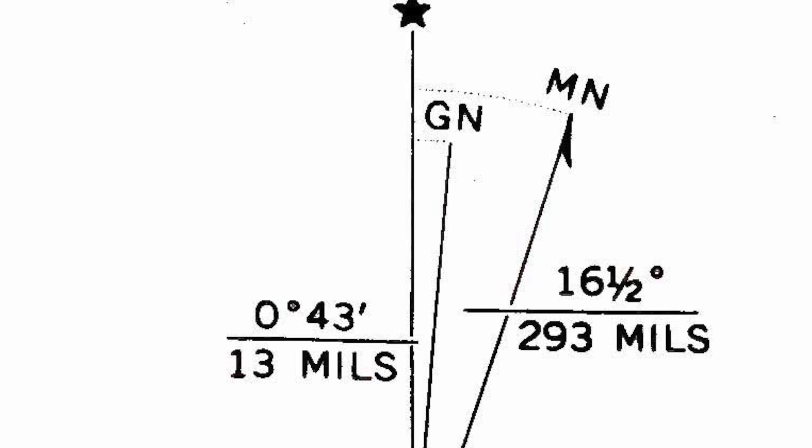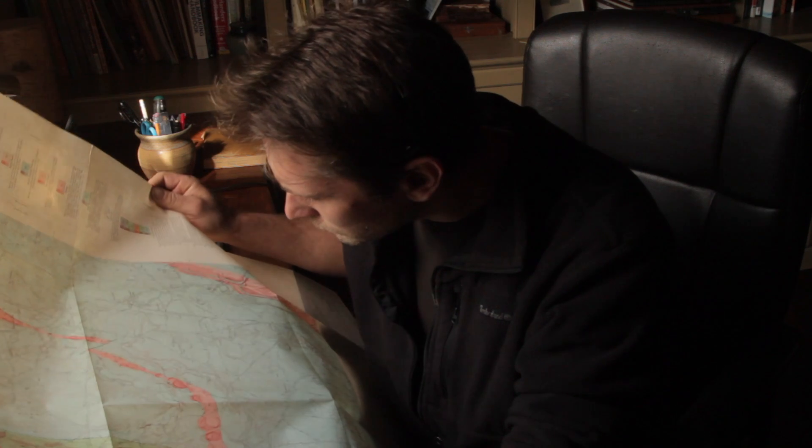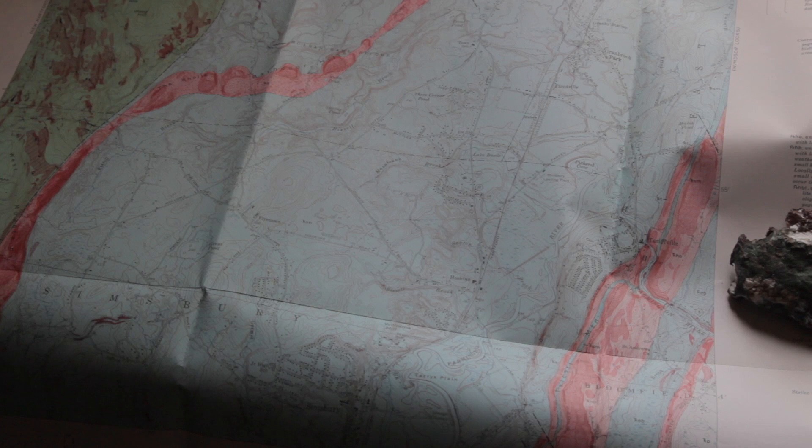Declination changes over time, so I needed to find out what the difference was between true north and magnetic north in 1830 in Connecticut. I found that the declination was 6 degrees and 25 minutes. Today's declination is about 13 degrees, so you can see that difference between 6 and 13 degrees would have thrown me way off — so far that I would probably never find a small mine site like this.